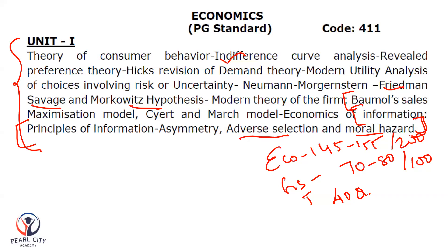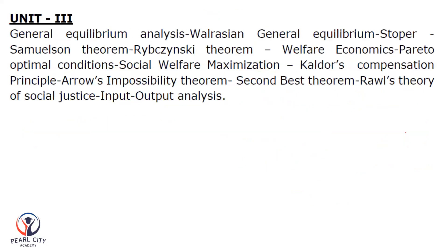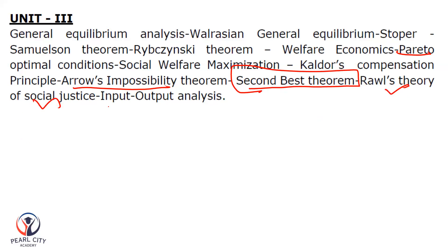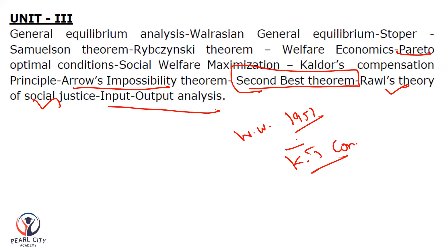So we have to cover units from July, August, September, and almost November. We will cover welfare economics. Particularly when you study Pareto optimality, you can be asked questions about Arrow's impossibility theorem, the second best theory, Rawls' theory of social justice, and input-output analysis by Wassily Leontief. You can easily answer this question paper.